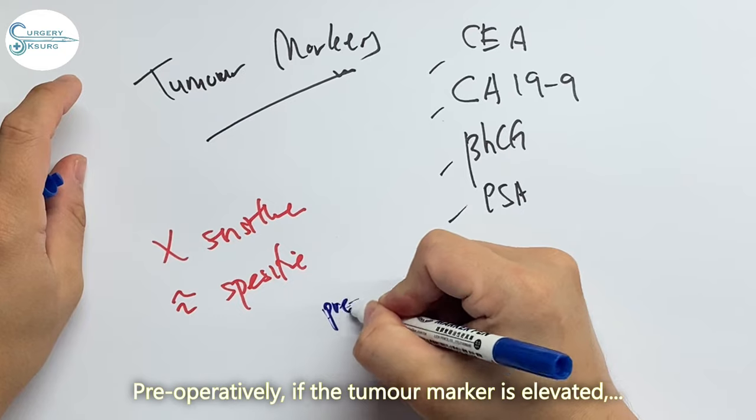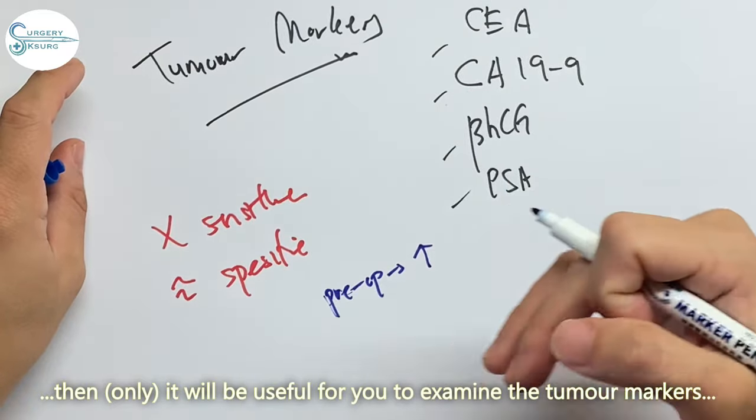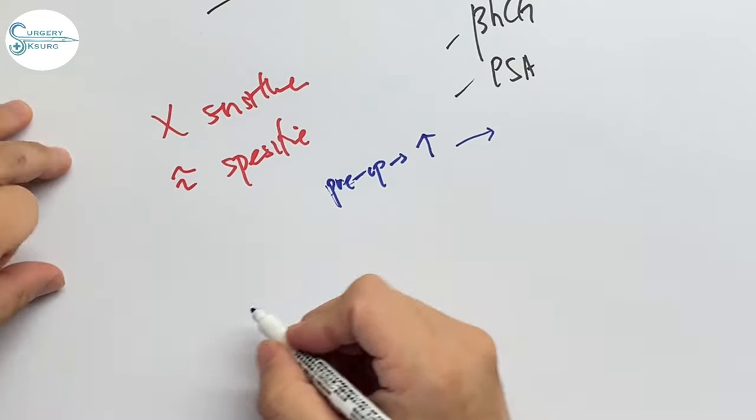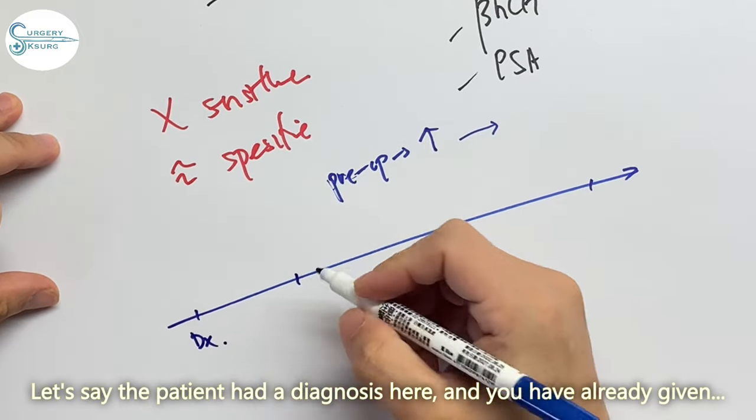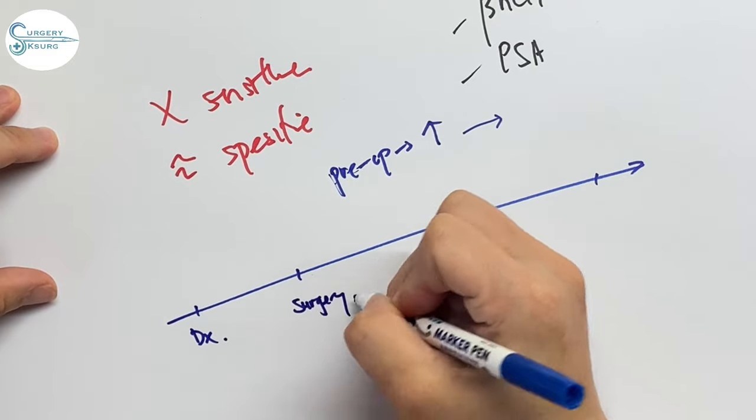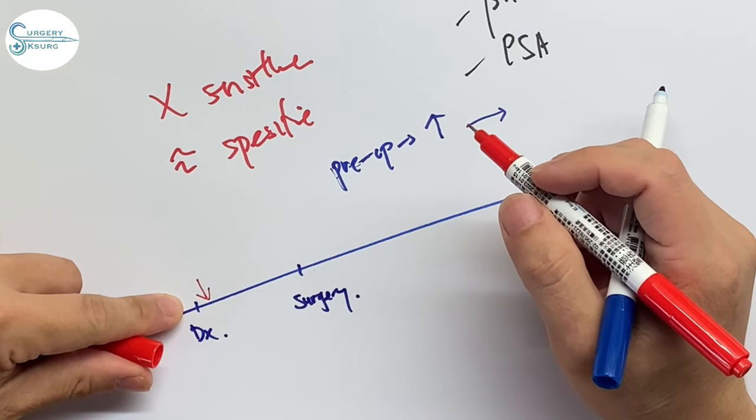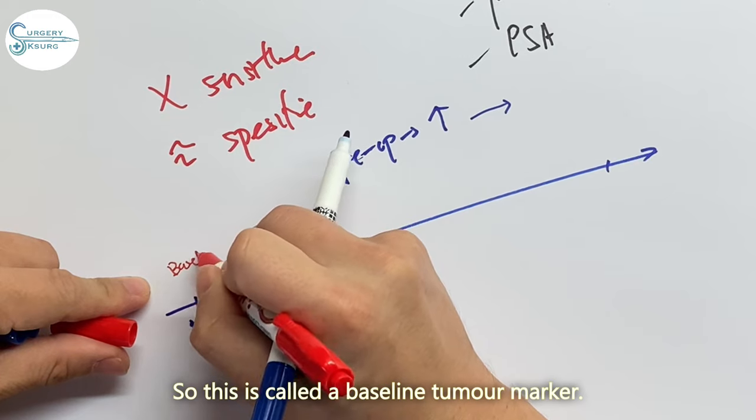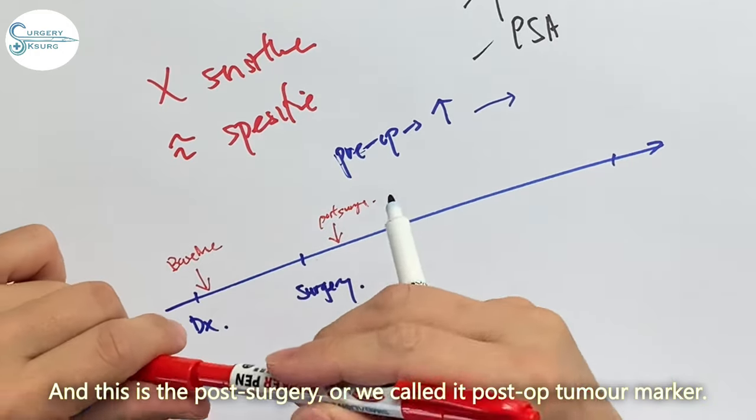Preoperatively, if the tumor markers are elevated, then it will be useful for you to examine the tumor markers in every follow-up clinic. Let me draw a timeline. Let's say the patient has a diagnosis here. You have already given strategy number one which is the upfront surgery. You have done the surgery here. During the diagnosis you should have already taken the tumor marker over here. Postoperatively you must have already done another tumor marker.